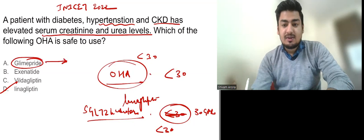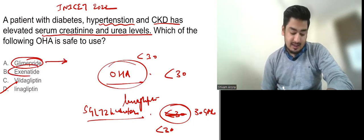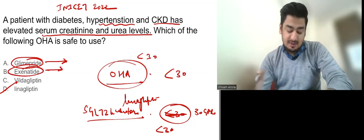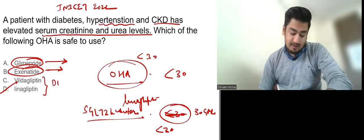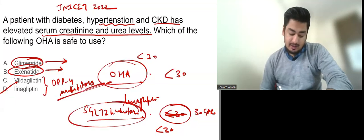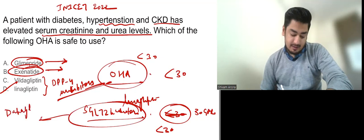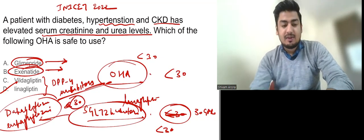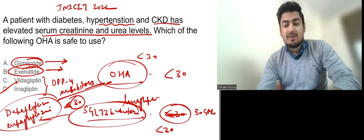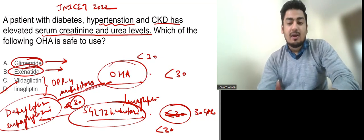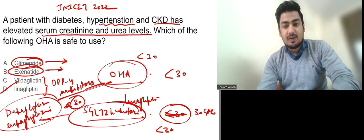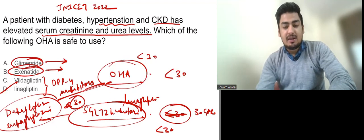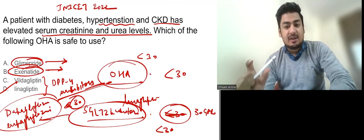Glimepiride is which class of OHA? You have to tell me in the comment section. Exenatide is which class of OHA? You have to tell me in the comment section. Vildagliptin and linagliptin both are DPP-4 inhibitors. And SGLT 2 inhibitors, for example, are dapagliflozin. So they both can be given up to GFR of 30. Below that we cannot give them. Other than that, dapagliflozin and empagliflozin, the SGLT 2 inhibitors, they are quite hot topic because they are now being used in cardiac drugs as well. So these are used in guideline-directed medical therapy for cardiac diseases as well. So SGLT 2 inhibitors are very important.